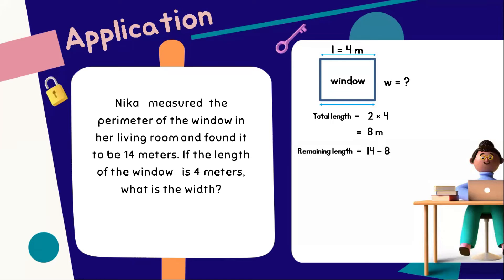How about the remaining length? For the remaining length, 14 meters minus 8 meters is equal to 6 meters. This time, to solve for the width, we need to divide the remaining length by 2. 6 divided by 2 is equal to 3 meters. Let's check if, indeed, 3 meters is the width of this window.